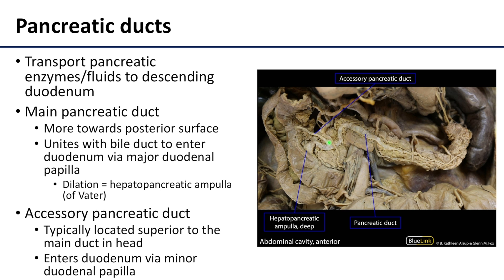There is commonly also an accessory pancreatic duct, very much involved with the head of the pancreas. These ducts often communicate. The fluids transported by the accessory pancreatic duct enter the duodenum via the minor duodenal papilla, superior to the major duodenal papilla. This is the typical pattern, though sometimes there is no communication, and occasionally the accessory pancreatic duct is actually larger than the main duct.